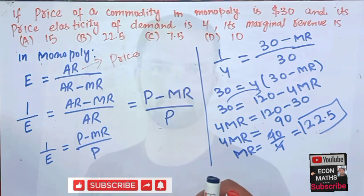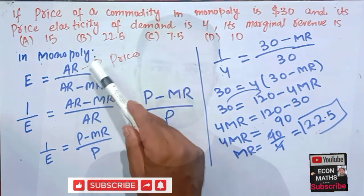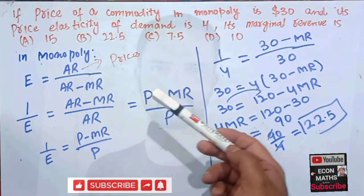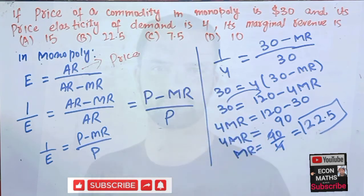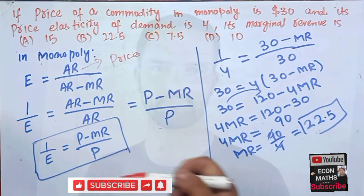One thing you should remember here is that average revenue means price. That is how we solve this. The relationship between price elasticity of demand and marginal revenue is given by this equation.